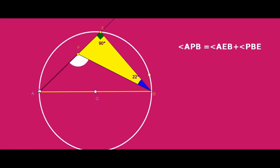Angle APB equals angle AEB plus angle PBE. Since E is a point on the circle, angle AEB is 90 degrees. Therefore angle APB equals 90 degrees plus angle PBE. Since angle PBE is a positive angle, angle APB is greater than 90 degrees.